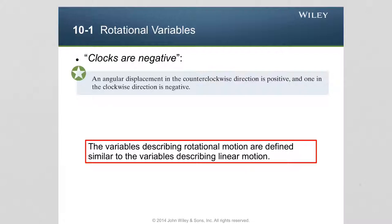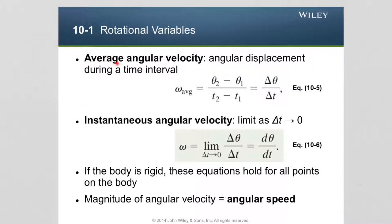Now let's define more rotational variables to describe the rotation of an object. The rotational variables are essentially identical in definition to variables describing linear motion, with different names to reflect the type of motion. First, the average angular velocity ω_avg is defined as the angular displacement — the difference between two angular positions θ₂ and θ₁ — divided by the time interval t₂ minus t₁, or Δθ divided by Δt.